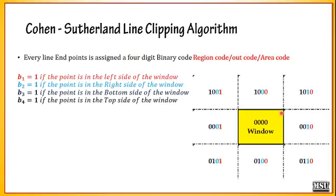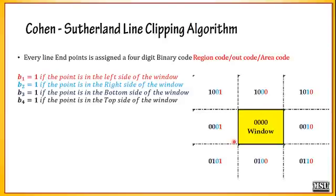That algorithm is called the Cohen-Sutherland line clipping algorithm. In this algorithm we use a region code, also called an outcode or area code. It is a 4-bit representation. Bit 1 (the rightmost bit): if it is 1, the point is on the left side of the window. Bit 2: if it is 1, the point is on the right side of the window. Bit 3: if it is 1, the point is on the bottom side. Bit 4: if it is 1, the point is on the top side. You can change this order, but accordingly you must calculate the values. This calculation is very important.